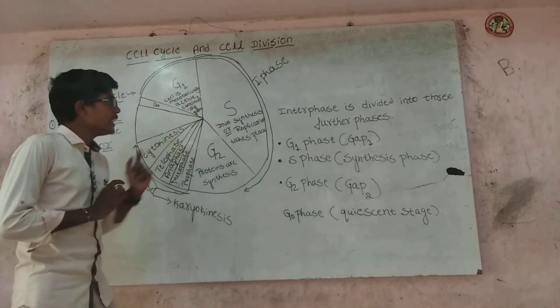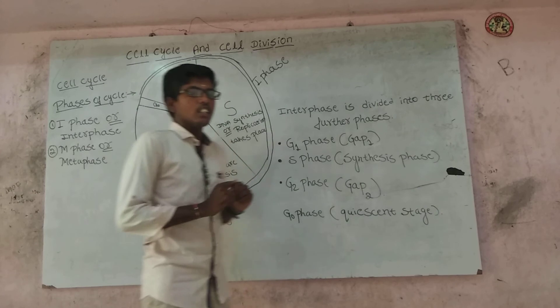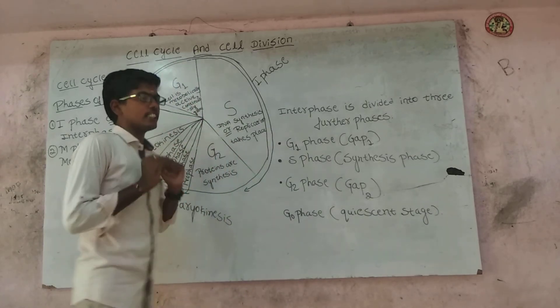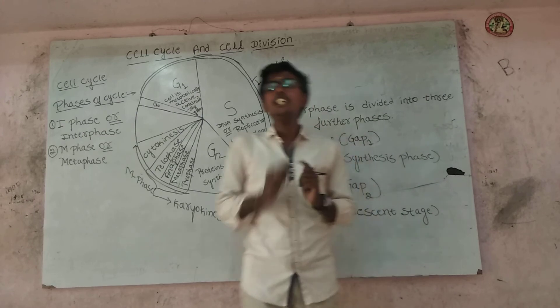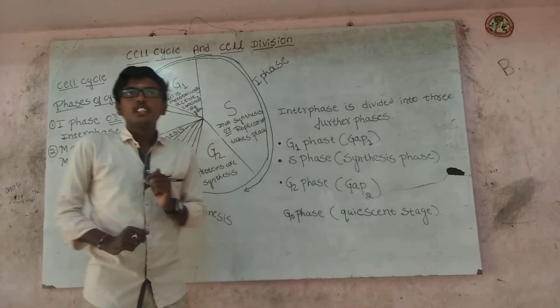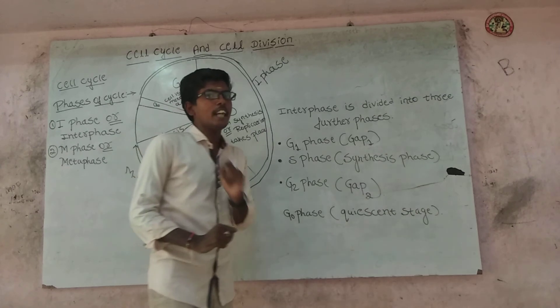In S phase, DNA synthesis or replication takes place. In eukaryotes, DNA replication takes place in the nucleus. Centriole duplication takes place in the cytoplasm.